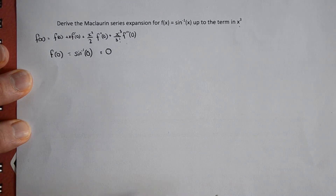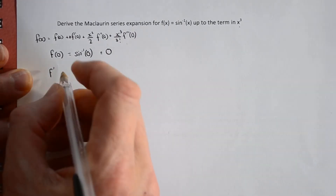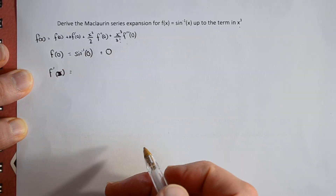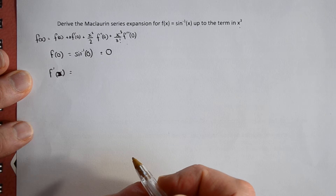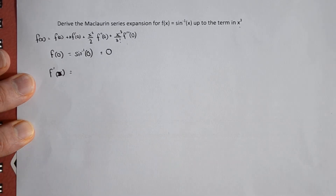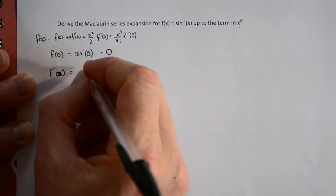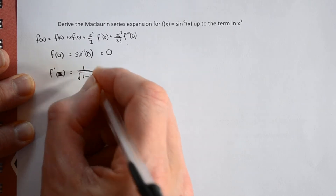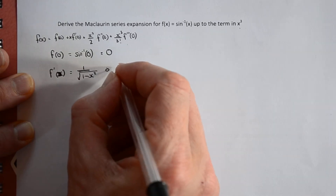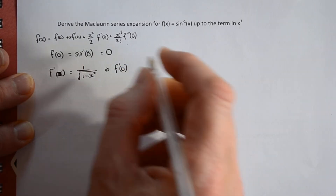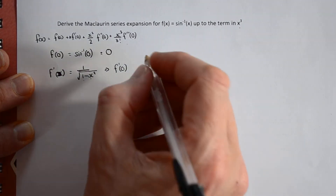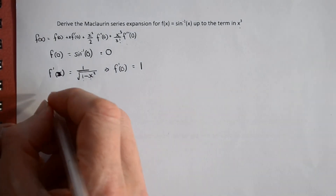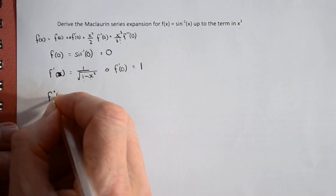Now for the first differential. To differentiate arcsin(x), that is a standard differential which you can find in the formula booklet — you might be asked to prove it, but we'll just quote it for now. That equals 1 over the square root of 1 minus x squared. Substituting in 0, it's 1 minus 0 which is just 1, so it's 1 over the square root of 1, giving us 1.